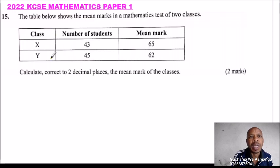So we have a table here, the first column, classes, class X and Y. The number of students, X had 43, Y had 45, mean mark was 65 for X and 62 for Y.